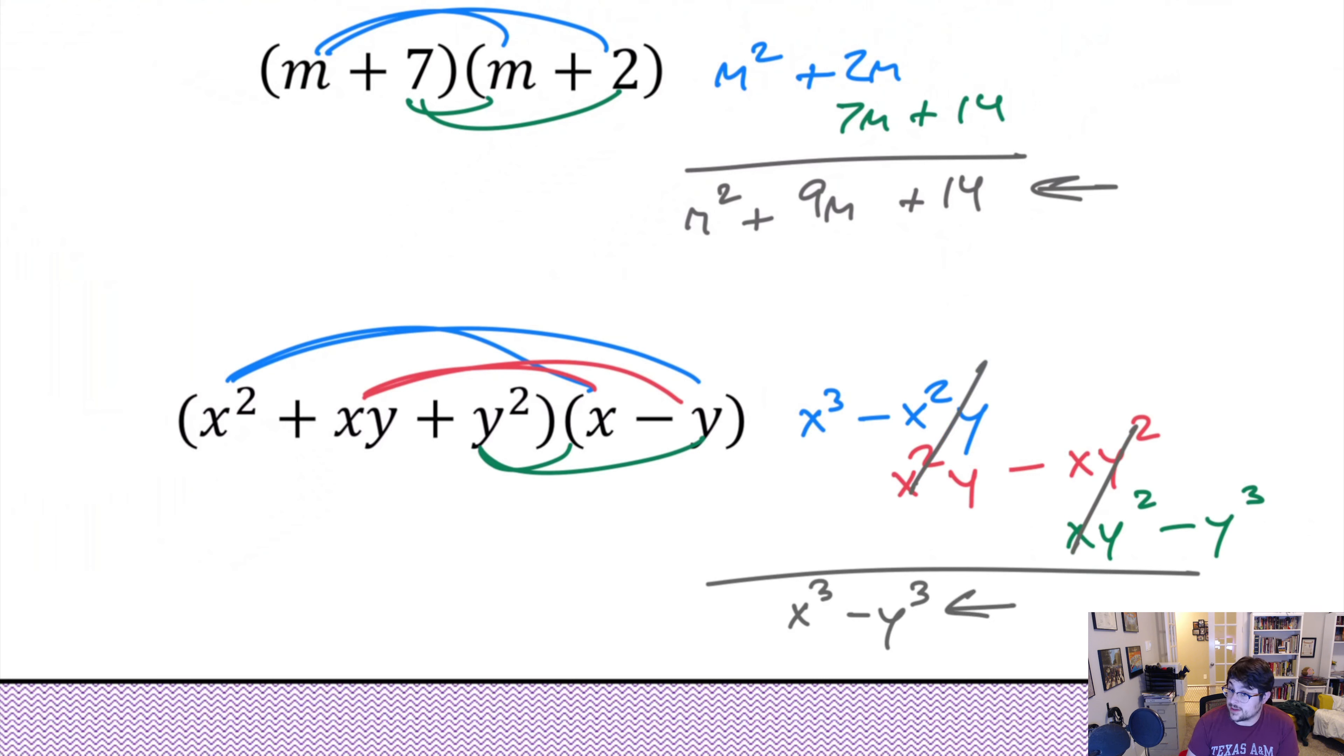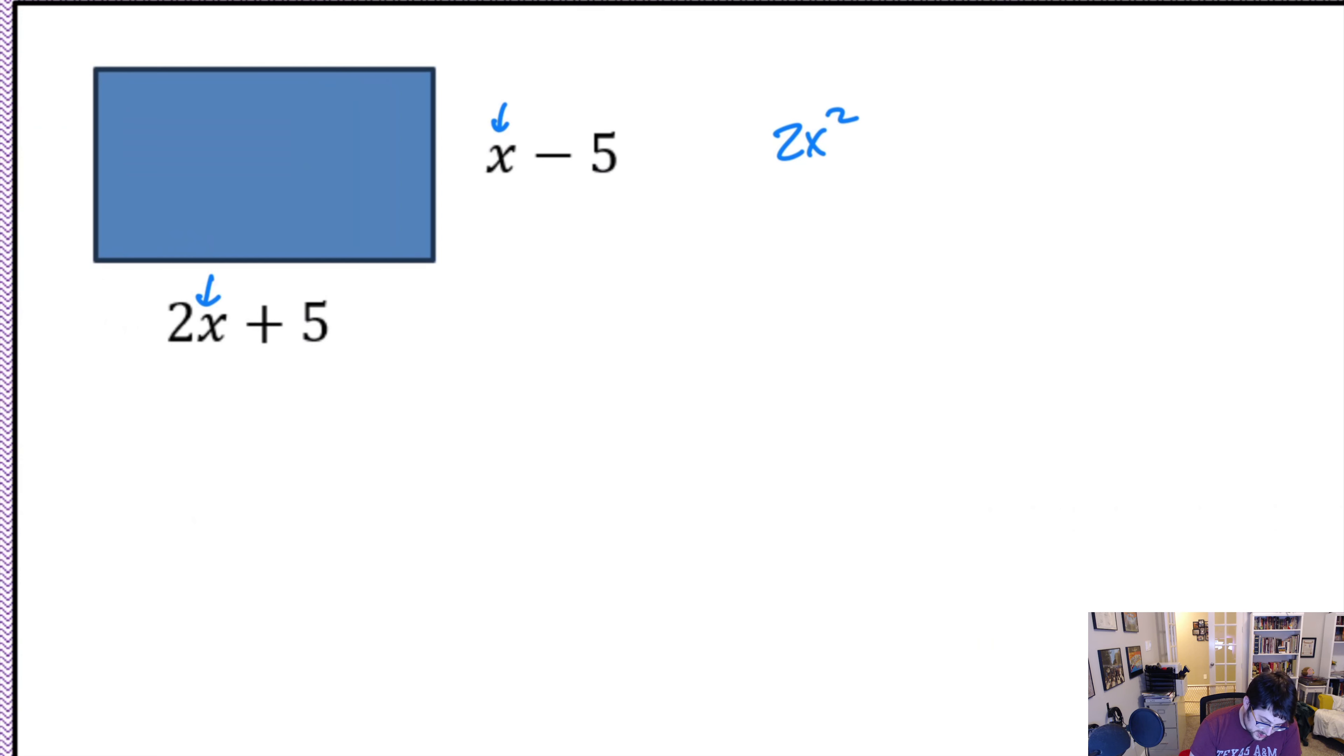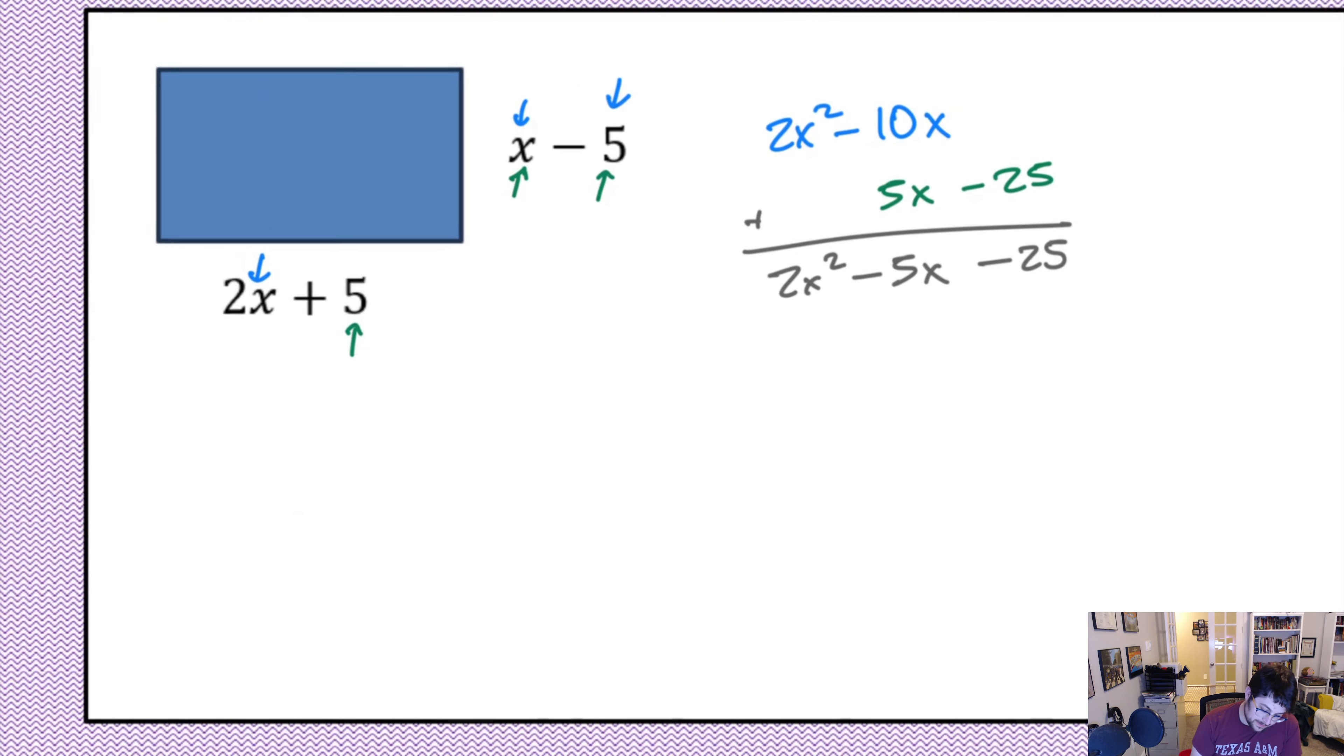All right. So, let's find area. What we need to do is multiply. So, first off, 2x times x, 2x squared. 2x times negative 5, negative 10x. Do the same thing. 5 times x is 5x. 5 times negative 5 is negative 25. If we combine like terms, we have 2x squared minus 5x minus 25. And we're done. That's our area.